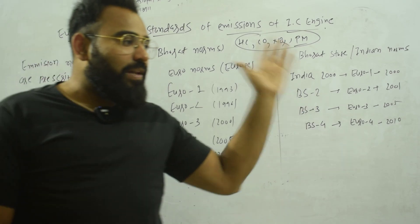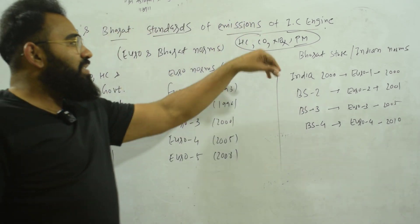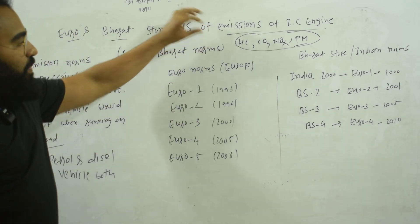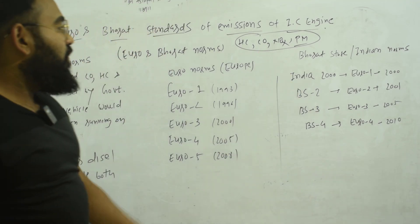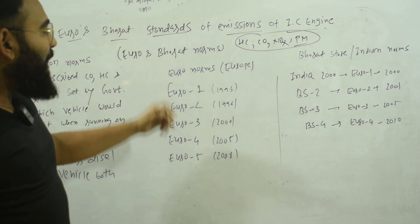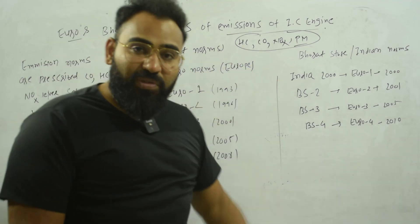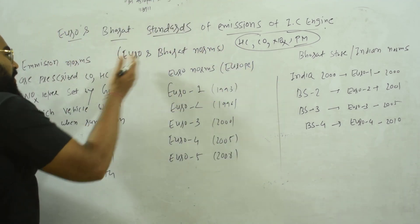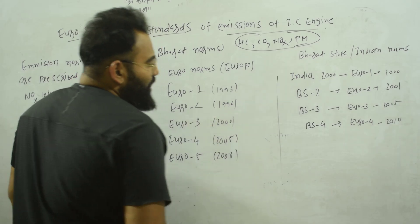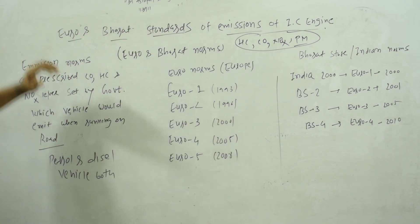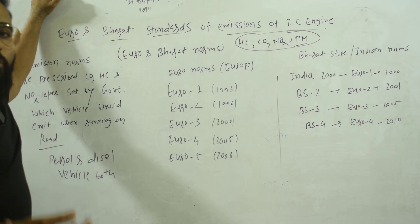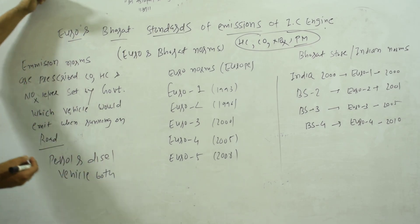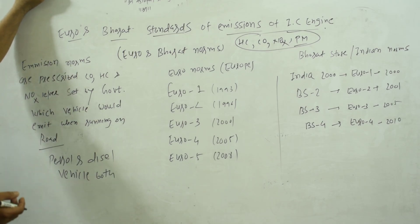All vehicle manufacturers have to follow the limits set up by the government. Europe has to follow Euro norms, and India has to follow its own norms. They are talking about emission control for vehicles, controlling HC, CO, NOx, and PM.